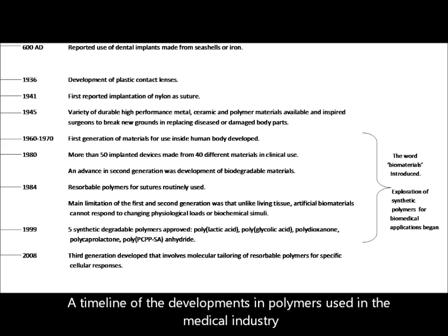This is the timeline of the development of polymers in the medical world. 1936 was the development of plastic contact lenses. From 1960 to 1970, the first generation of materials for use inside the human body were first developed. In 1980, an advancing second generation was the development of biodegradable materials. And finally, in 2008, the third generation was developed, involving molecular tailoring of resorbable polymers for specific cellular responses.